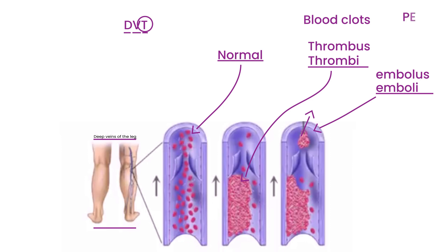If this happens, the third scenario is when you get a PE — pulmonary embolism. That means the emboli travel all the way to the lungs, which is why it's called pulmonary embolism. If it travels to the lungs, that's a major problem because it can block vital oxygen exchange and lead to death. That's why DVTs are taken very seriously.